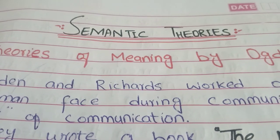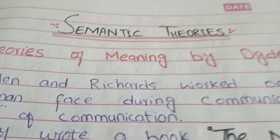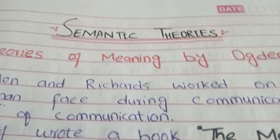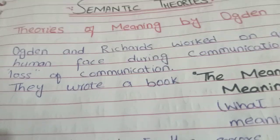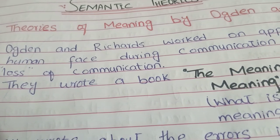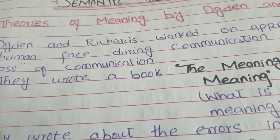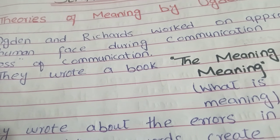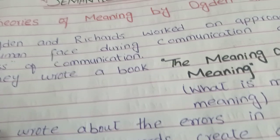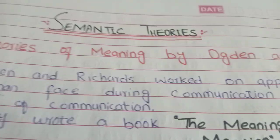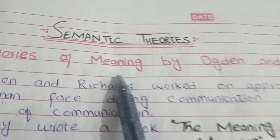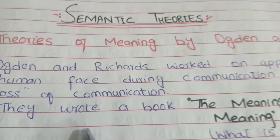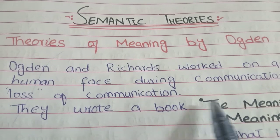Assalam alaikum, welcome to my channel Linguistics and Literature. Today's lecture is about semantic theories. As the word 'semantic' shows, it is related to meaning during communication. We lose our communication because we do not pay attention to how we communicate, and how our listener recognizes us. Many scholars worked on this and spent countless years formulating theories about methods of effective communication. Today we will study theories of meaning by Ogden and Richards. I have prepared very precise notes to make them clear, which are very effective for semantic students.